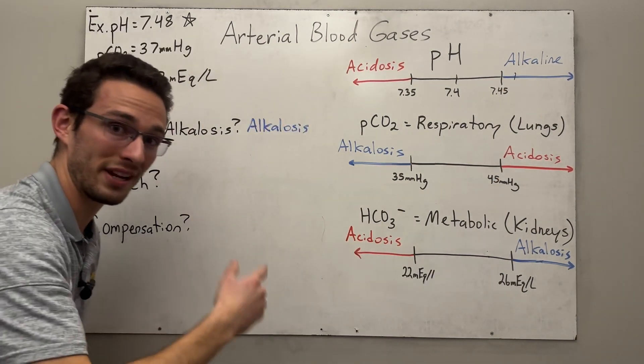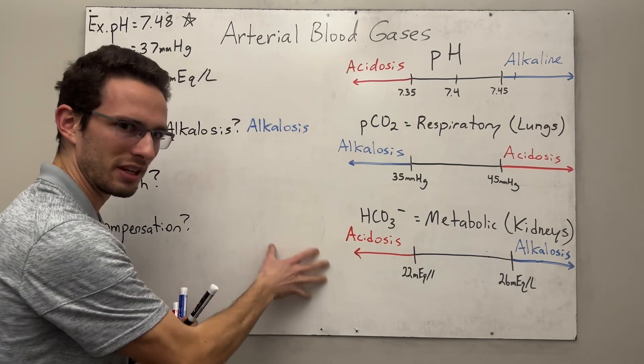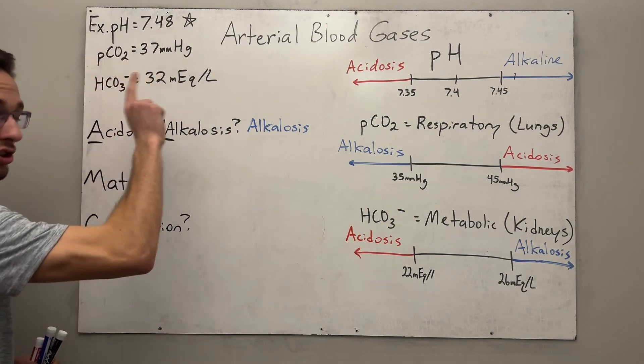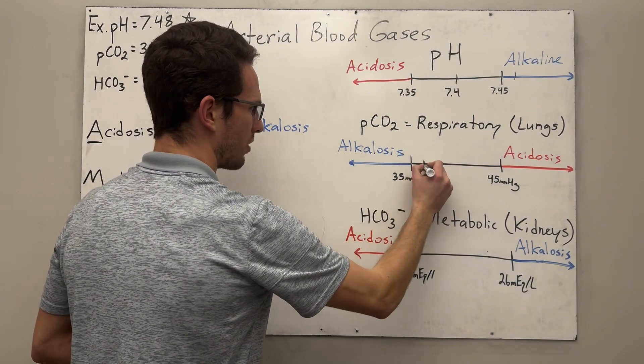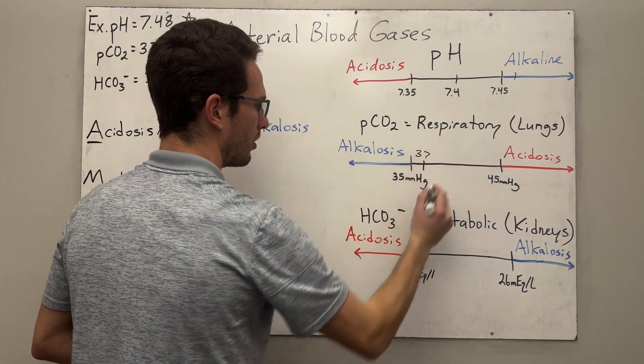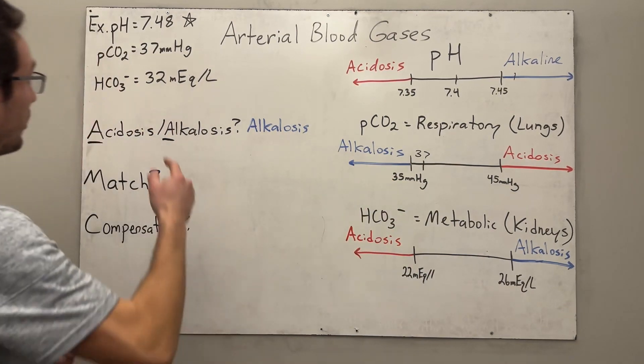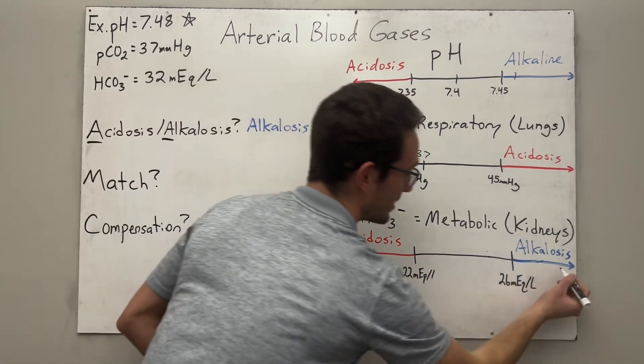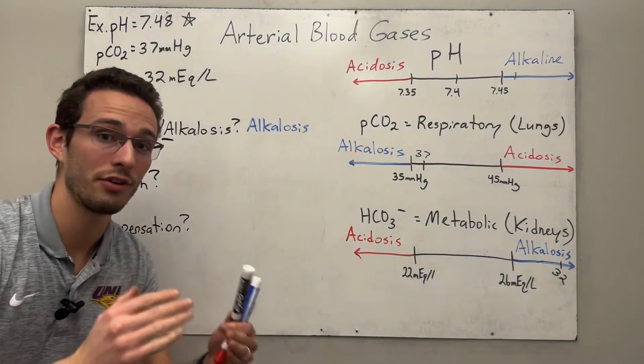So now that we've determined it's alkalosis, let's try to find the match, basically saying which value is going to be the problem. So if we look at the carbon dioxide first, always, we see that it's 37. Well, that falls within a normal range right about here. So that's not going to be the problem. Yes, it is a little low, but that's not the problem. But then we look at the bicarbonate and we see that it is 32, which is crazy, crazy alkalotic. So there we have found our match.